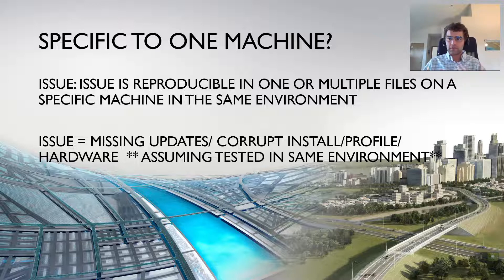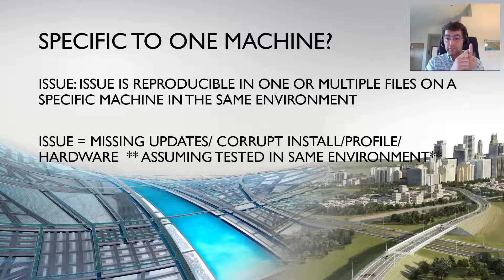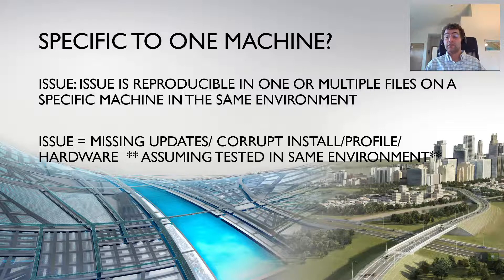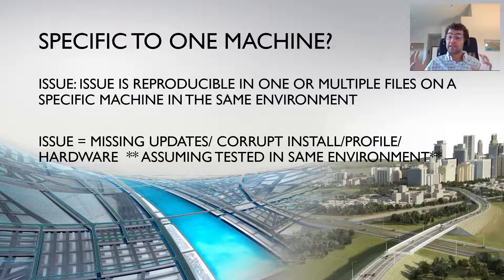There can be a few different things causing a machine-specific issue. First: missing updates. I have a video for this — how to install updates for Civil 3D. Focus on Civil 3D updates and the built-on technology. Second: corrupt install. There can be an issue with your installation — maybe something went wrong or your install is old. Uninstall and reinstall — that could shake things loose. Third: your Civil 3D profile and customizations. Things get customized and can break along the way. I have a video for resetting your profile and backing it up in case it doesn't fix it.